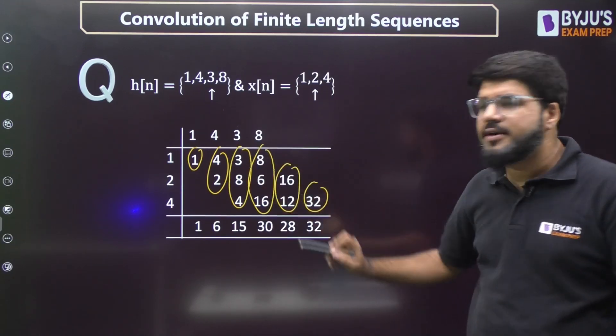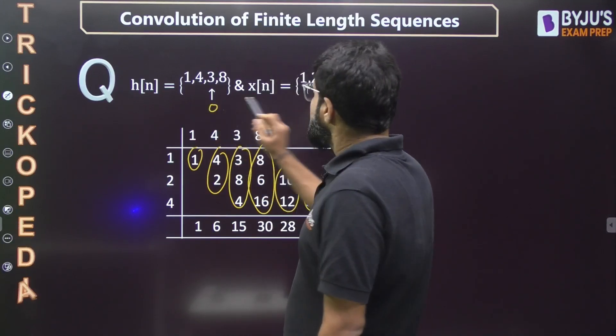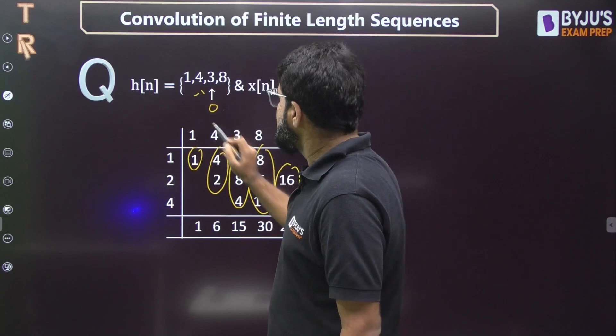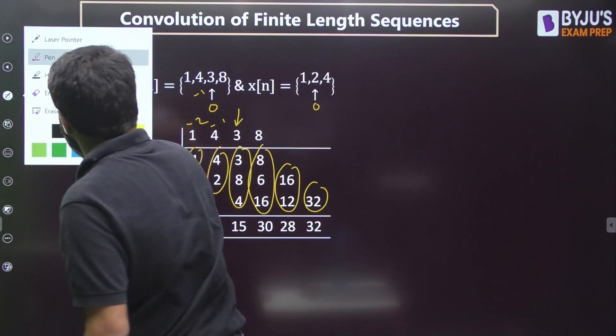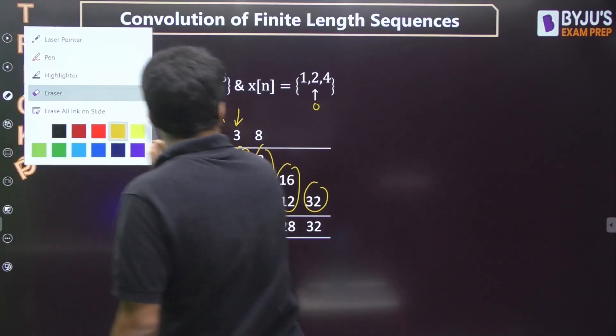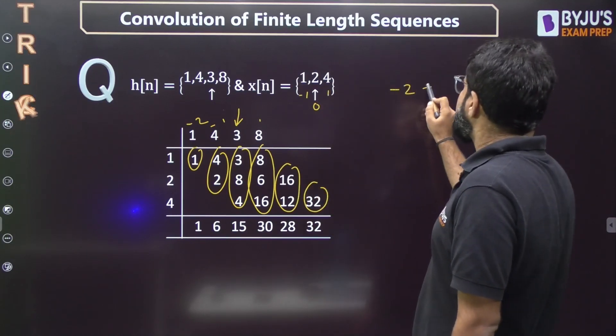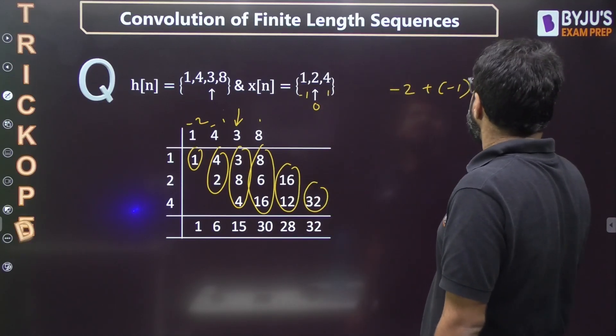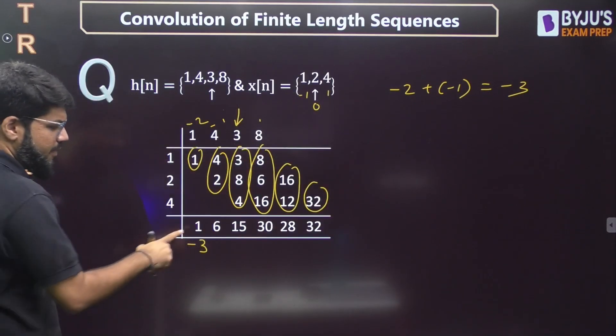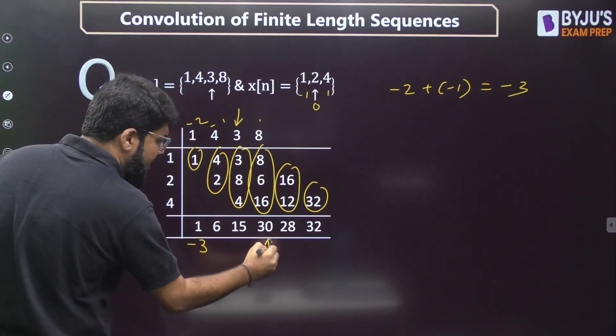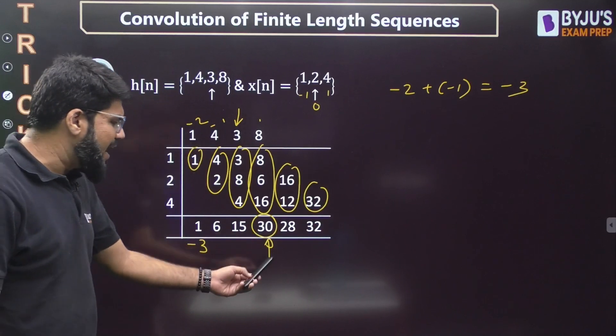When you add: this is 1, this is 6, this becomes 15, this is 30, this is 28, and this is 32. But where will the output start? Sum of starting indices are added. If this is origin, this is -1, this is -2. If this is origin, this is -1 and this is +1. Sum of starting index: -2 plus -1 is -3. That means the output should start from -3. If this is -3, -2, -1, here I get the arrow, here I get the origin.